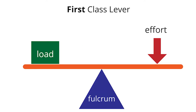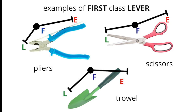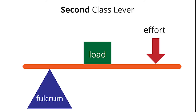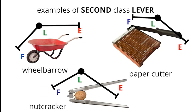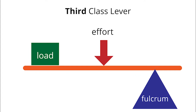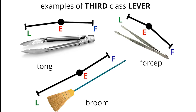First class lever has the fulcrum at its center. The load and the effort sit on both opposite sides. Examples are pliers, scissors, and a doorbell. Second class lever has the load at the center. It moves the load at an angle. Examples include wheelbarrow, paper cutter, and nutcracker. The third class lever has effort at its center. Often, this lever is used to lift objects. Examples are tongs, forceps, and a broom.